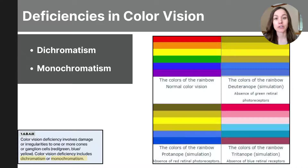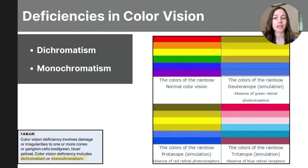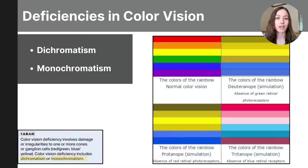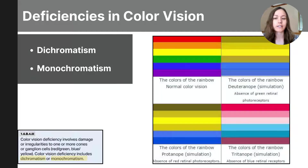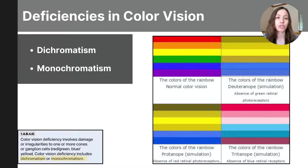Now that we've learned about color vision theories, let's talk about color blindness. Color blindness is a condition where people have difficulty distinguishing between certain colors due to issues with their color vision system, affecting how colors are perceived. It impacts about 8% of men and about 0.5% of women globally. It's often inherited and more common in males due to its genetic link to the X chromosome. Dichromatism is a type of color blindness where a person has two types of functioning color receptors or cones instead of the usual three. If the individual is lacking either the red or green cone, this makes it difficult to distinguish reds from greens; a lack of a blue cone leads to difficulty distinguishing blues and yellows.